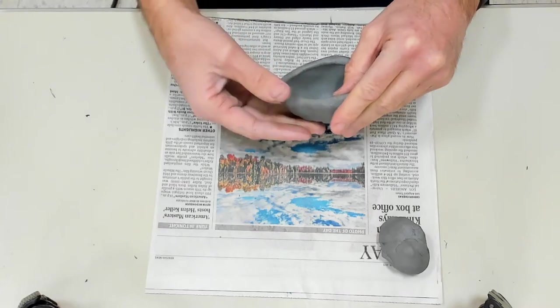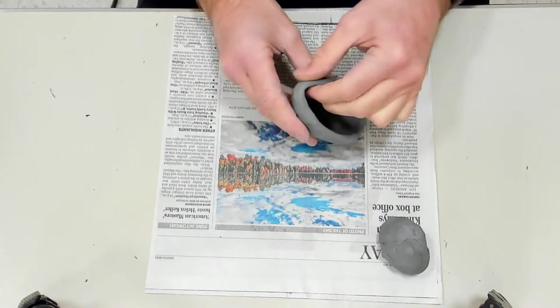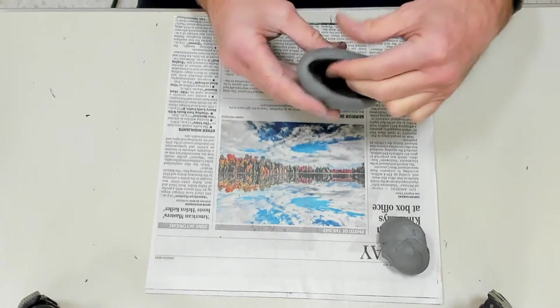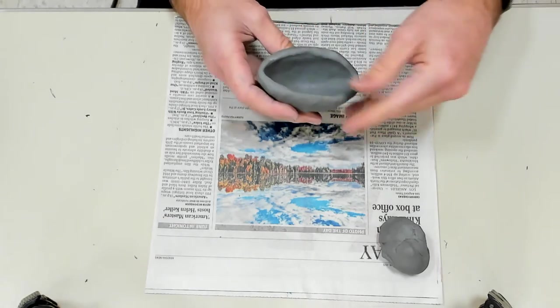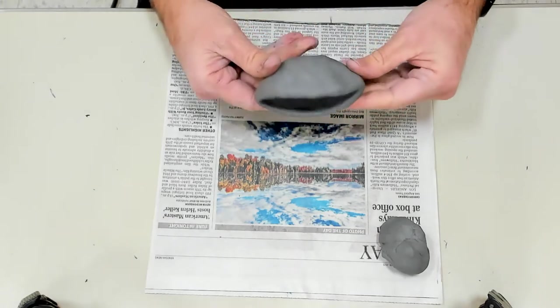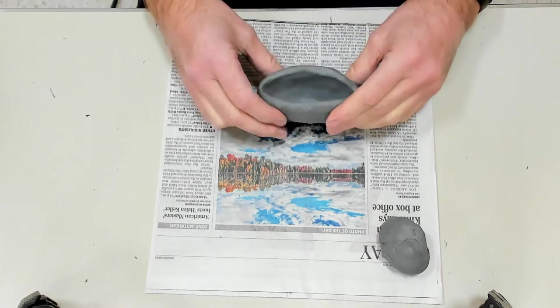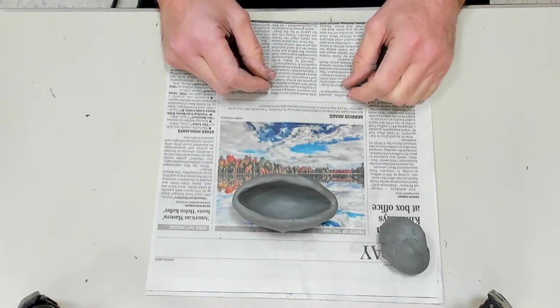The last thing you're going to do if you have cracks is put water on it. Try not to use lots of water. It weakens the clay and makes it mushy. I'm getting a good mouth shape there. That's going to be my monster's mouth.